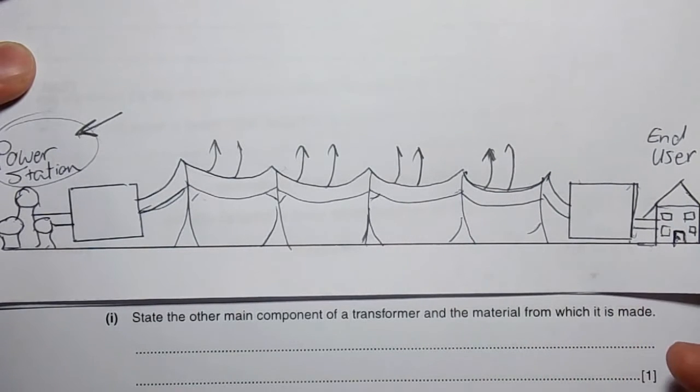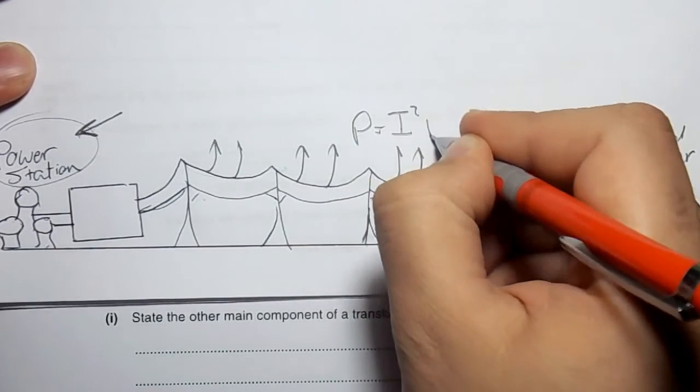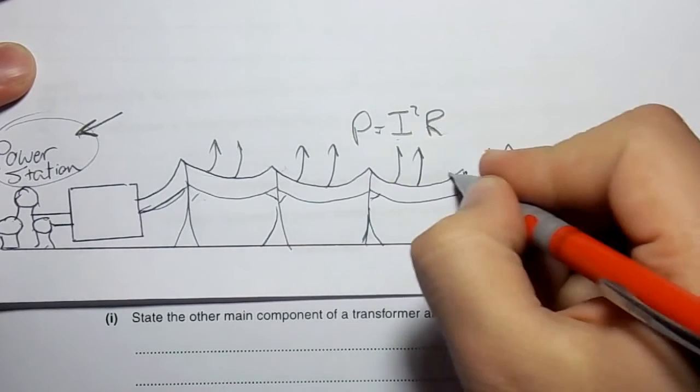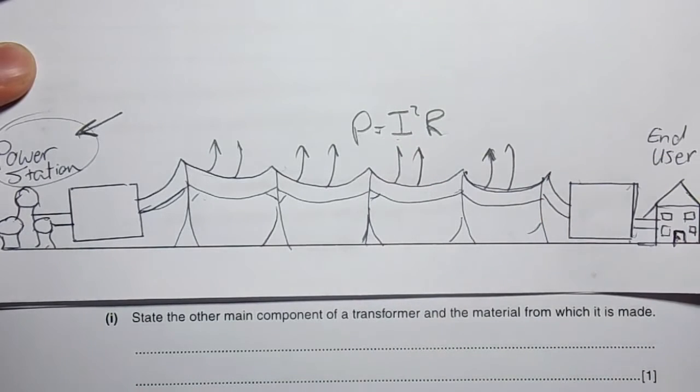So my electrical energy that I produced here will be lost as heat. By the time it reaches the house, not much will arrive. The amount of heat lost can be calculated as power equals I square R, where I is the current flowing in the wire and R is the resistance of the wire.